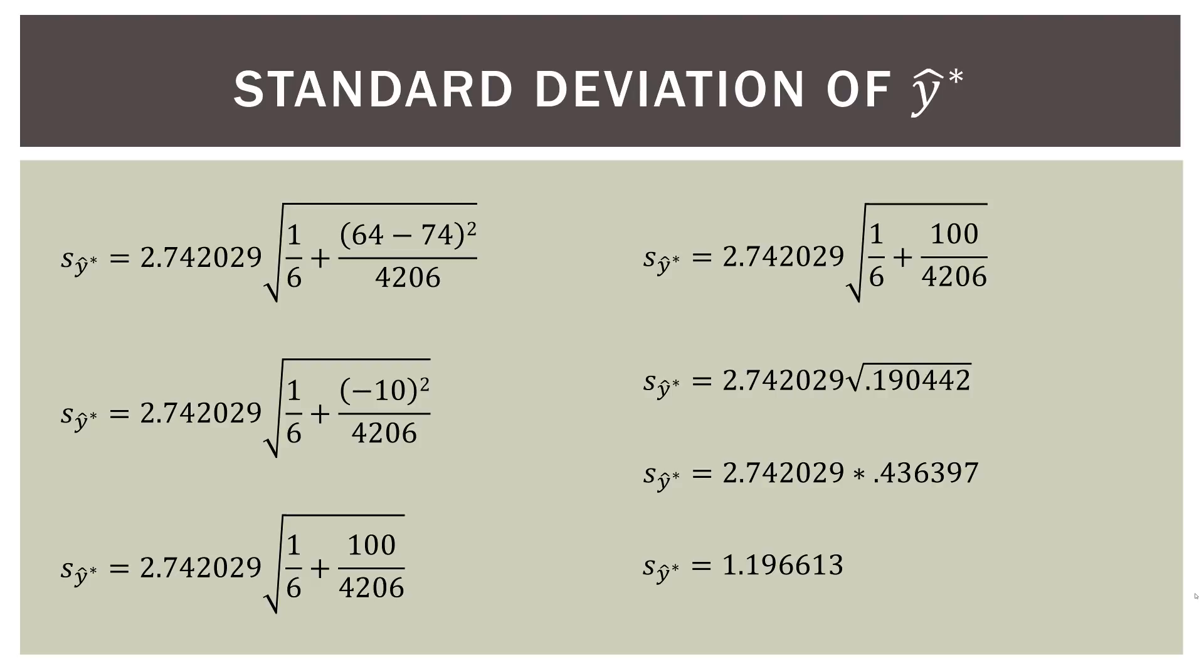So again, all that is, is sticking in numbers we already have, or you already have, doing a little bit of algebra, and then getting the answer. That's all it is. Now we have the third component of our confidence interval for the mean value of y at a given x.